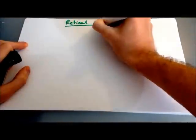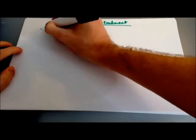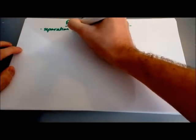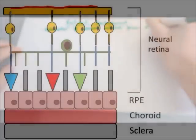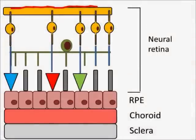Next we're going to look at retinal detachment, and this is the separation of the neural retina from the retinal pigment epithelium. We've got a picture of this here to show you what that means.